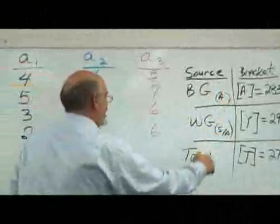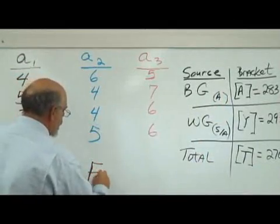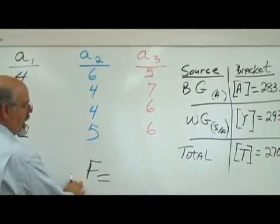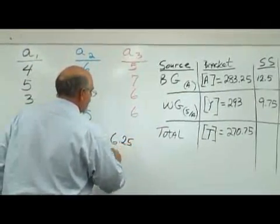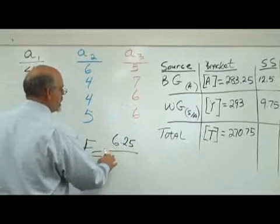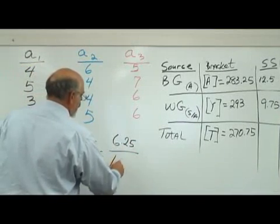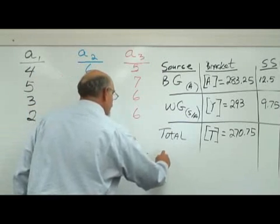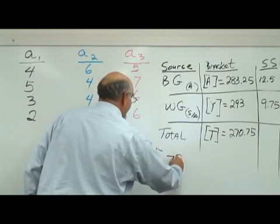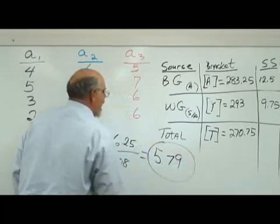So your F statistic is going to be 6.25. That's your between group divided by your within group, 1.08. You divide that out. It looks like you get 5.79. That is your F statistic.